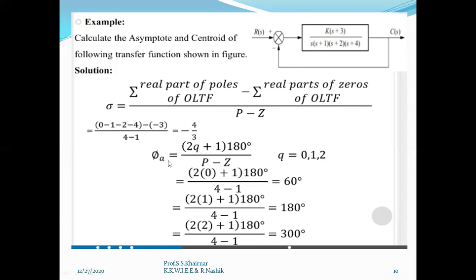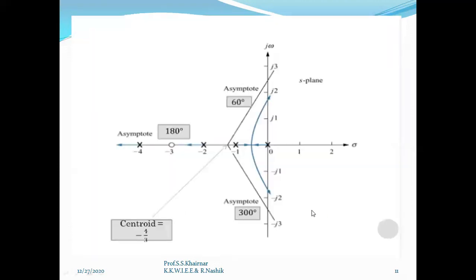How do you find the angle of asymptote? Using phi_a = (2q + 1) × 180° / (p − z), with q = 0, 1, 2. When q = 0: (2×0 + 1) × 180 / (4−1) = 1 × 180/3 = 60°. When q = 1: (2×1 + 1) × 180/3 = 3 × 180/3 = 180°. When q = 2: (2×2 + 1) × 180/3 = 5 × 180/3 = 300°. So the three angles are 60°, 180°, and 300°.